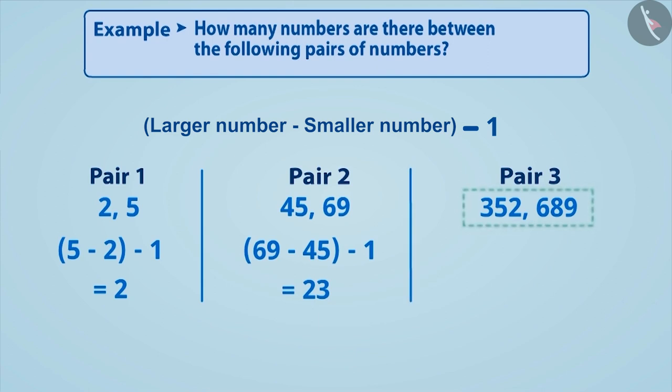Now can you find out how many whole numbers are there between 352 and 689? In order to find it, we have to find the solution of 689 minus 352 minus 1. The solution is 336. This means that there are 336 whole numbers between these two numbers.